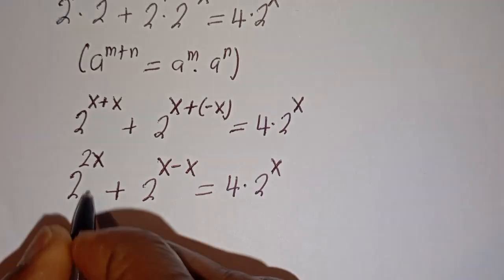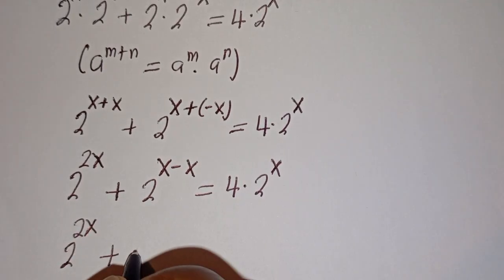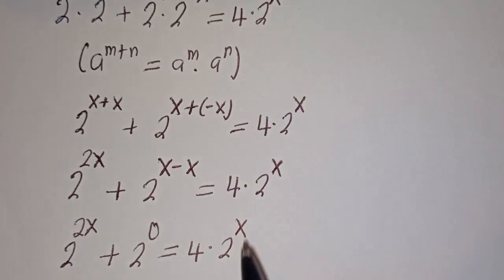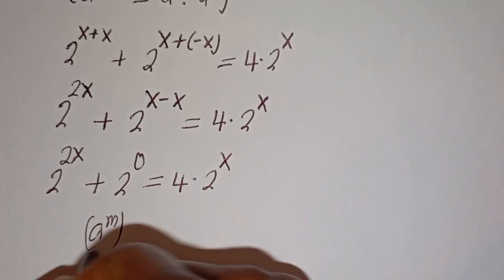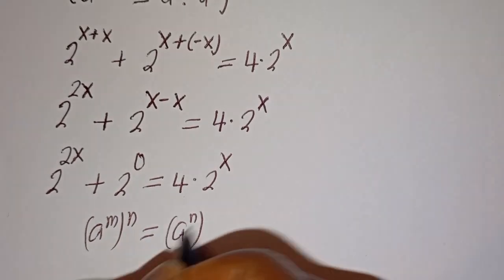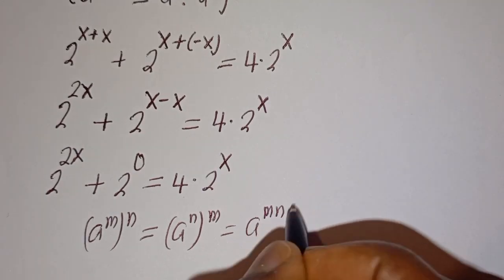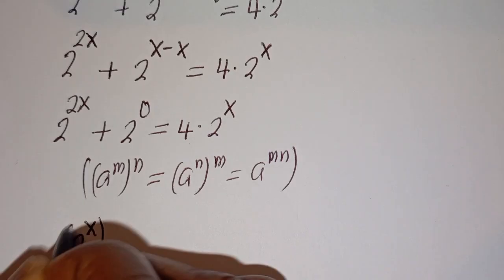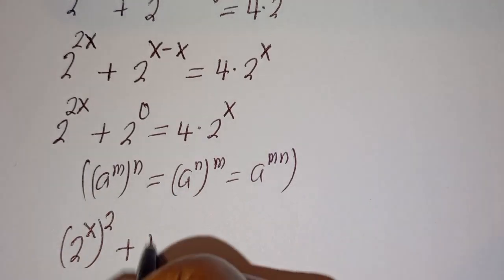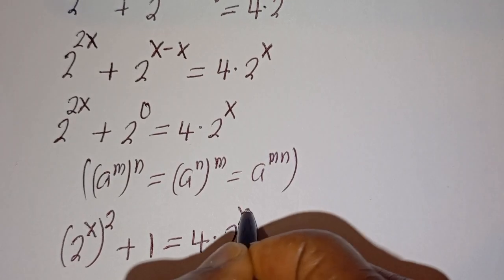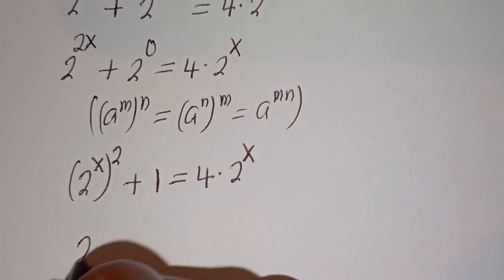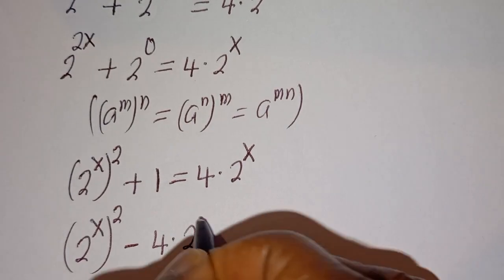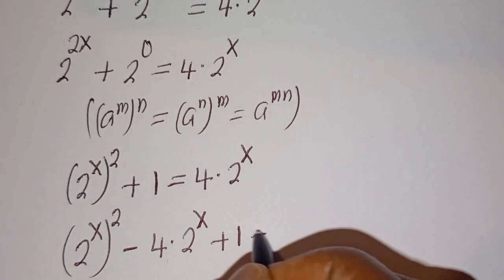Take note that if you have a to the power of m to the power of n, this is equal to a to the power of mn. Then this can be written as 2 to the power of x squared plus 2 to the power of 0, which is 1, is equal to 4 multiplied by 2 to the power of x. And this gives 2 to the power of x squared minus 4 multiplied by 2 to the power of x plus 1 is equal to 0.